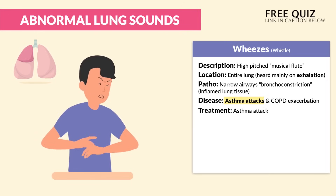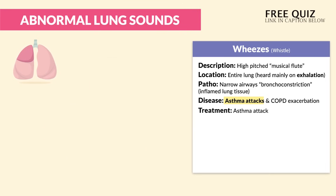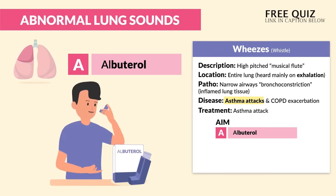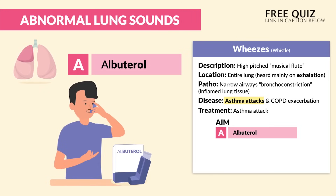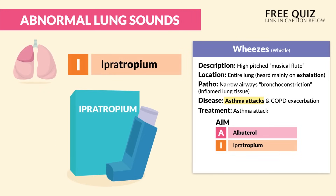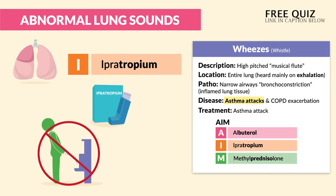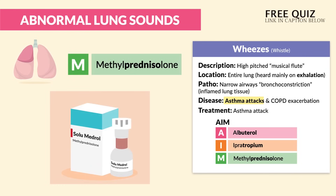The treatment for asthma attacks is always tested, so write this down. The memory trick we use is AIM: A is for albuterol — given first for brutal asthma attacks, it's the one and only rescue drug. I is for ipratropium, an anticholinergic to dry out secretions — just think you can't pee with atropium since it dries the body out. M is for methylprednisolone, brand name Solu-Medrol — a slow-acting steroid to treat the swelling.